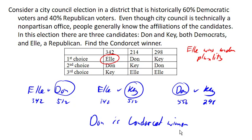This is also an example where we might run into a problem called insincere voting. Insincere voting is when people don't vote their actual preferences. If this election was happening under the plurality method, the Democratic leadership in this city might recognize that Don and Key were going to split the Democratic vote. Noticing that Key might be preferred, they might encourage voters to vote for Key by officially endorsing him. Not wanting to see their party lose the election, Don's supporters may insincerely vote for Key — really, they're voting against L.